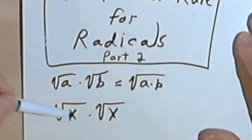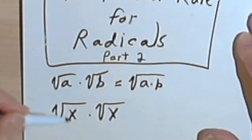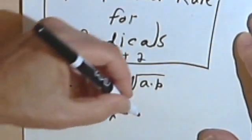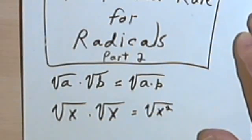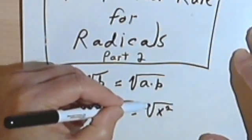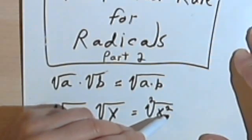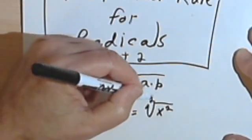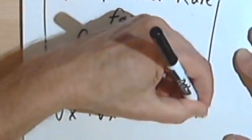Let's say we have the square root of x times the square root of x. You can't take the square root of x — it's not a perfect square — but we can multiply these two radicals together, and that gives us the square root of x squared. We can take the index, which is 2, and divide it into the exponent under the radical sign. 2 divided into 2 is 1, so this is just going to equal x.